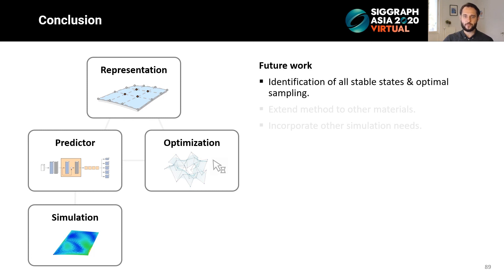As immediate future work, we see the improvement of our sampling strategy to guarantee that all stable states have been identified. We would also like to see this method applied to materials different from glass, and incorporate advanced architectural simulation needs like wind load and temperature.